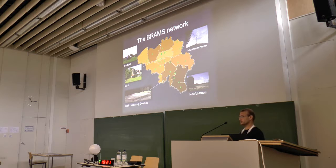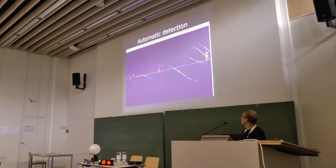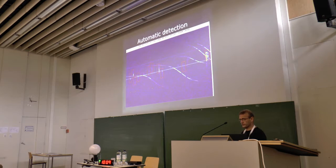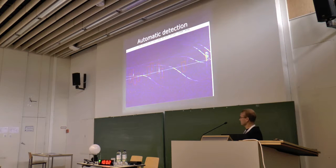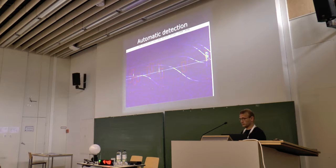Each station generates a so-called spectrogram, shown here, where the horizontal axis is time and the vertical axis is frequency. The time span here is 5 minutes, which means each station generates 288 images per day. Since we have 25 stations, that means about 8,000 images for the whole network.